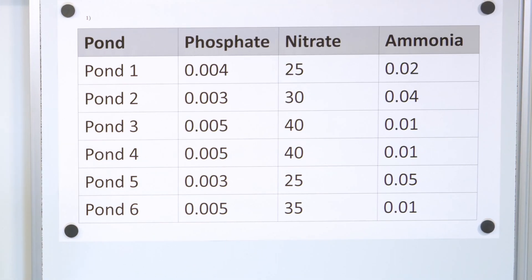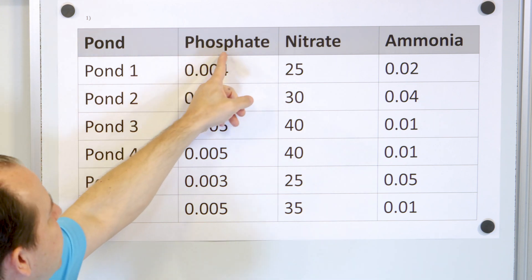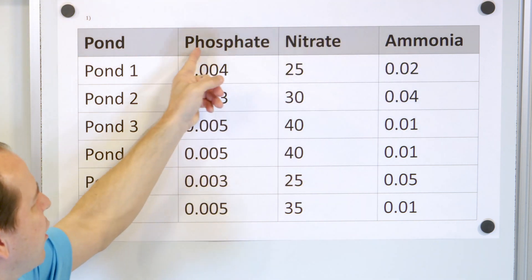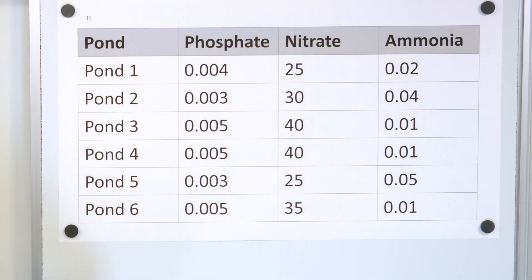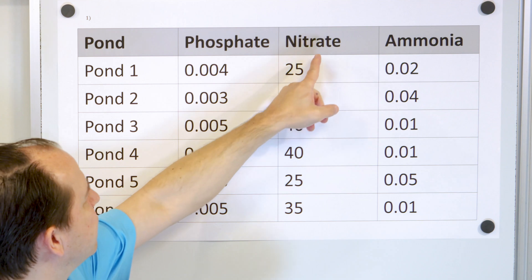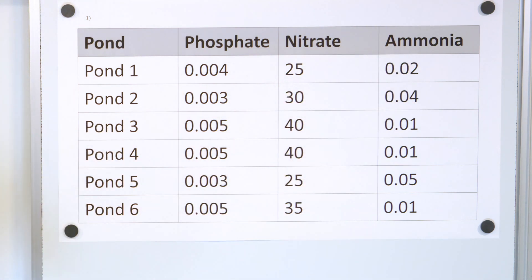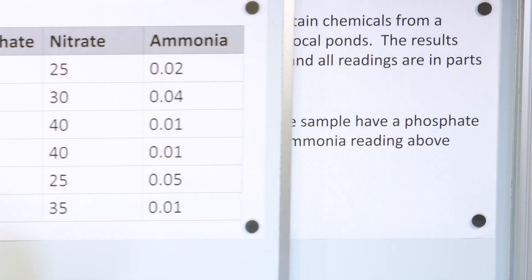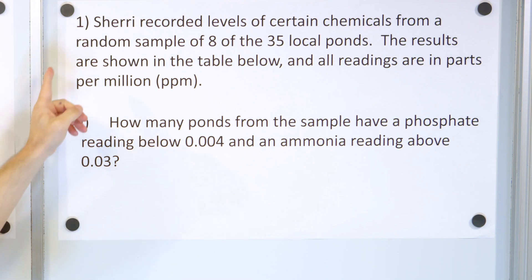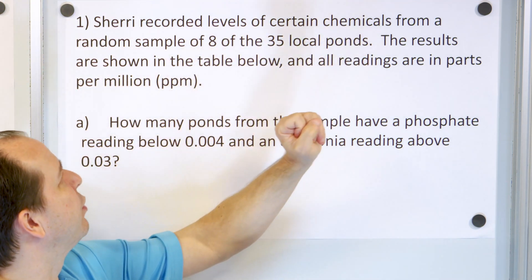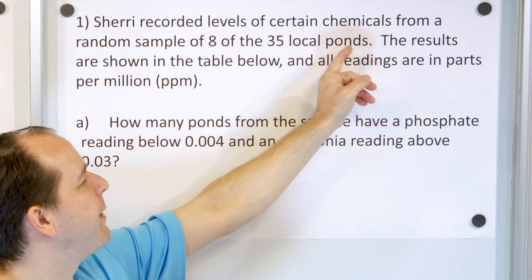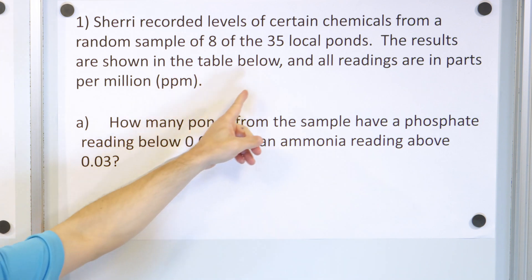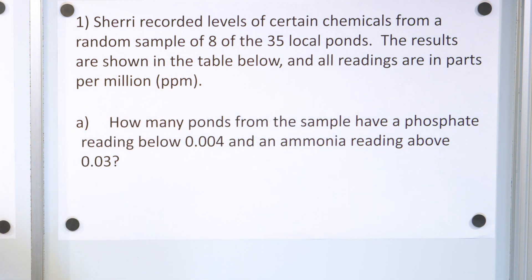We have some sort of table that involves ponds. These are going to be ponds of water, and we have different things involved in the water chemistry: phosphate level, nitrate level, ammonia level. Sherry recorded levels of certain chemicals from a random sample of eight of the 35 local ponds. The results are shown in the table below, and all the readings are in parts per million.